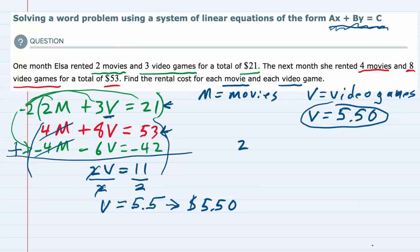If I replace the V here with 5 dollars and 50 cents, we would have 2 times M plus 3 times 5 dollars and 50 cents equals the 21 dollars. And from here, we can solve for M by first multiplying to simplify this. So this is 2M plus 3 times 5.50 is 16.50 equals 21.